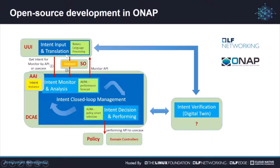Based on ONAP, we have provided a basic model of intent-based network. The users could input the intents, and we can translate those intents in UUI. Those translated requirements will be able to create a new use case in SO. The users' intent will be saved in A&AI. The closed-loop management of intent-based network is done in DCAE, which includes two main parts: intent monitoring and insights, and also intent decision and action based on AI models. The execution of the requirements is done in DCAE and the domain controllers.